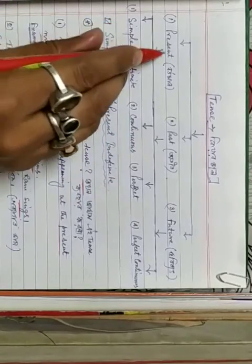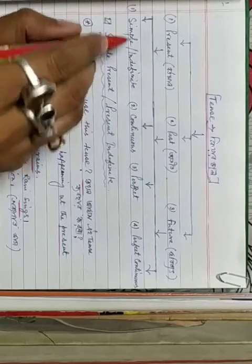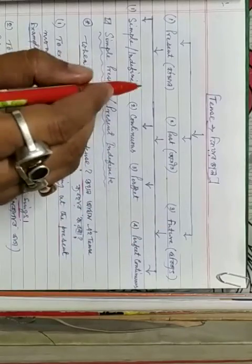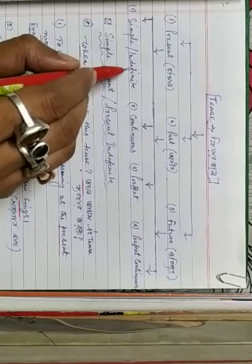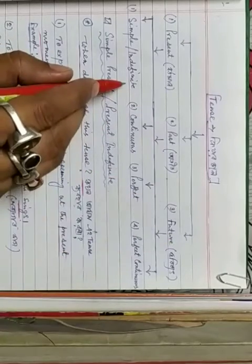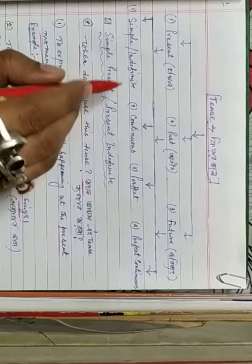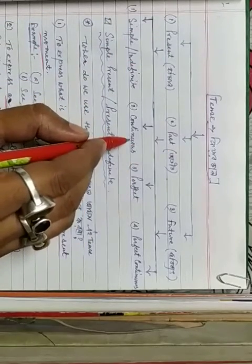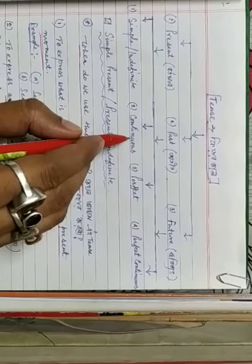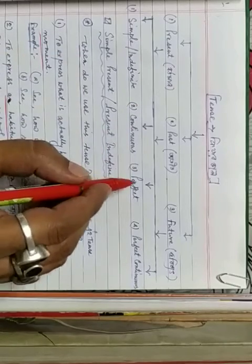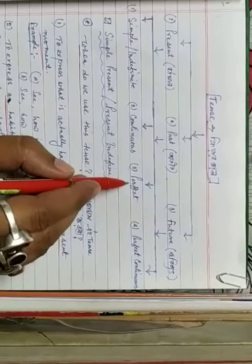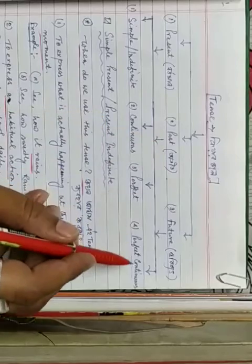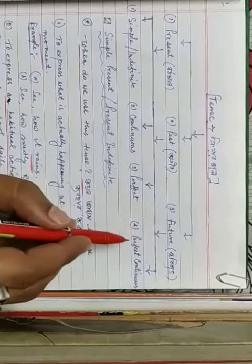There are three groups: Simple present, simple past, simple future — also called present indefinite, past indefinite, future indefinite. Next: present continuous, past continuous, future continuous. Then present perfect, past perfect, future perfect. And finally: present perfect continuous, past perfect continuous, future perfect continuous.